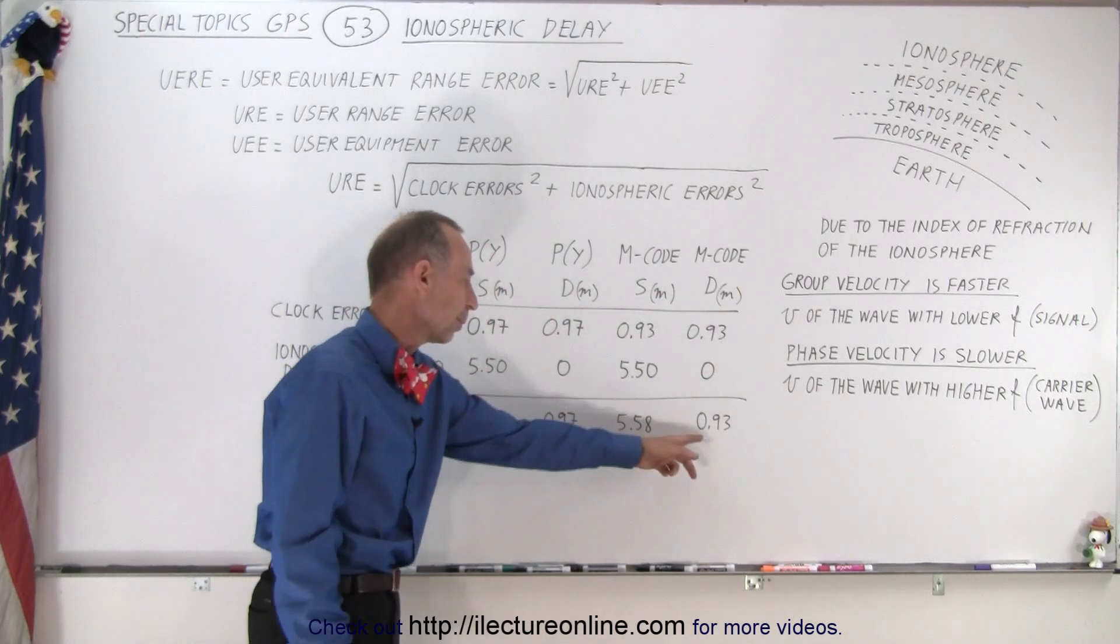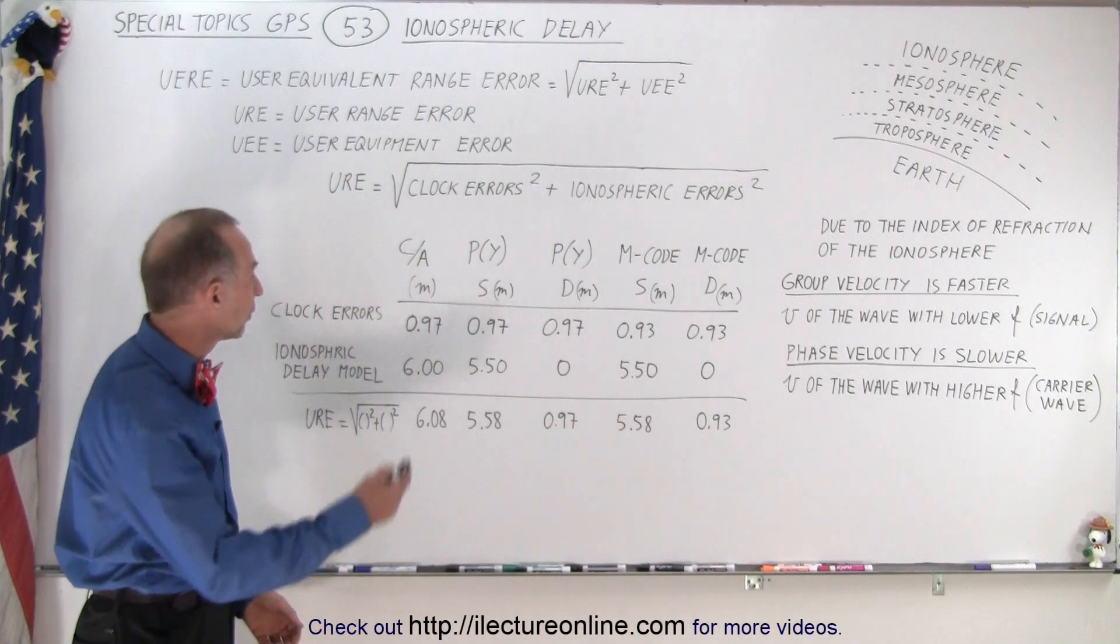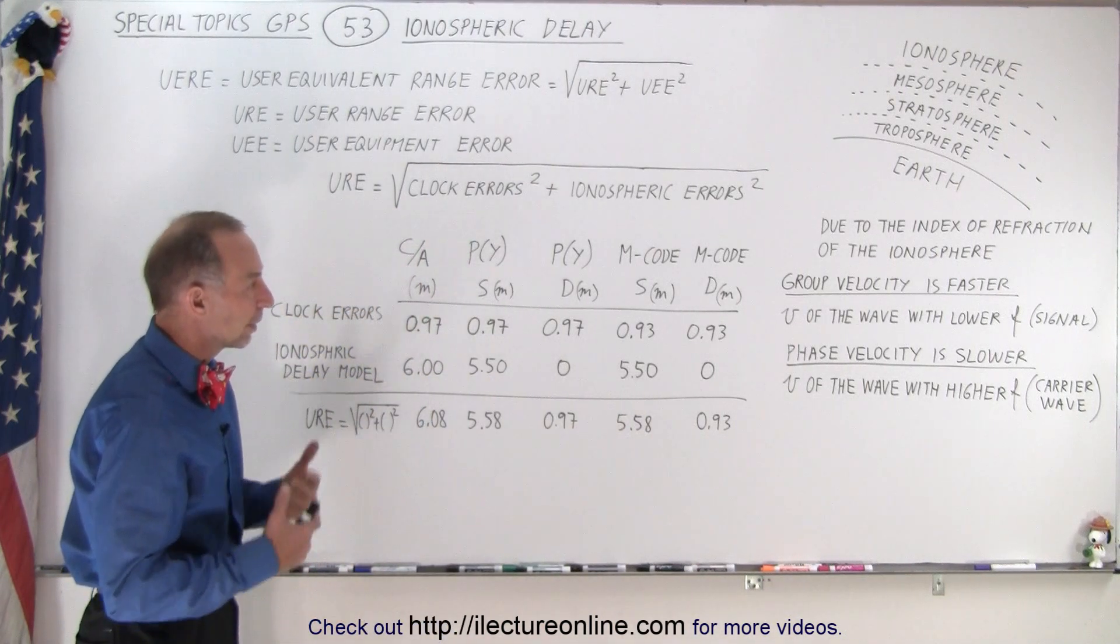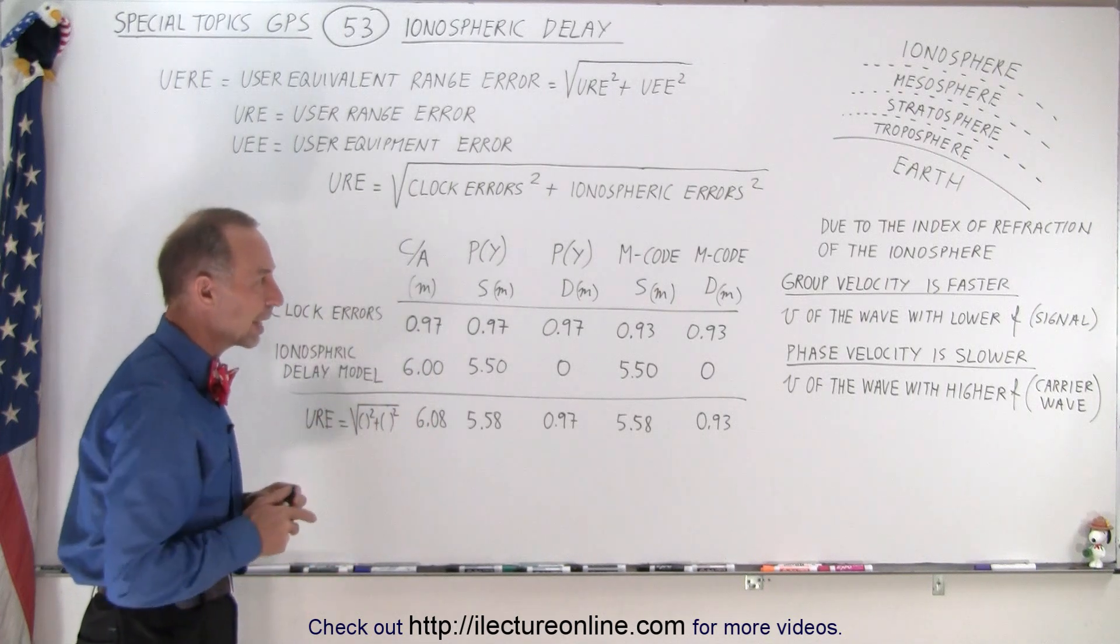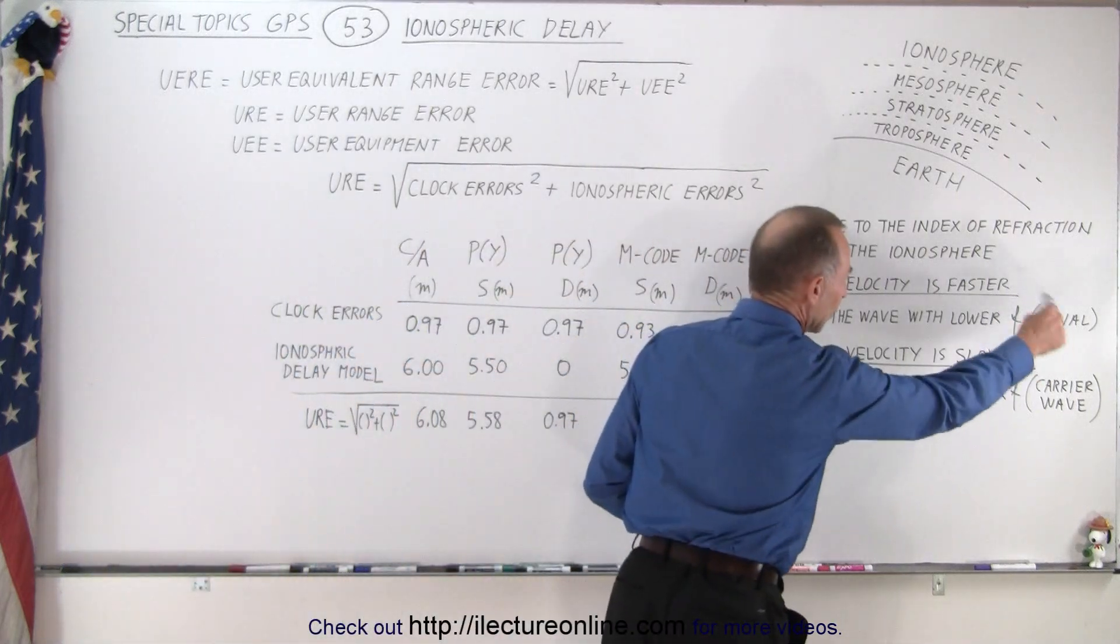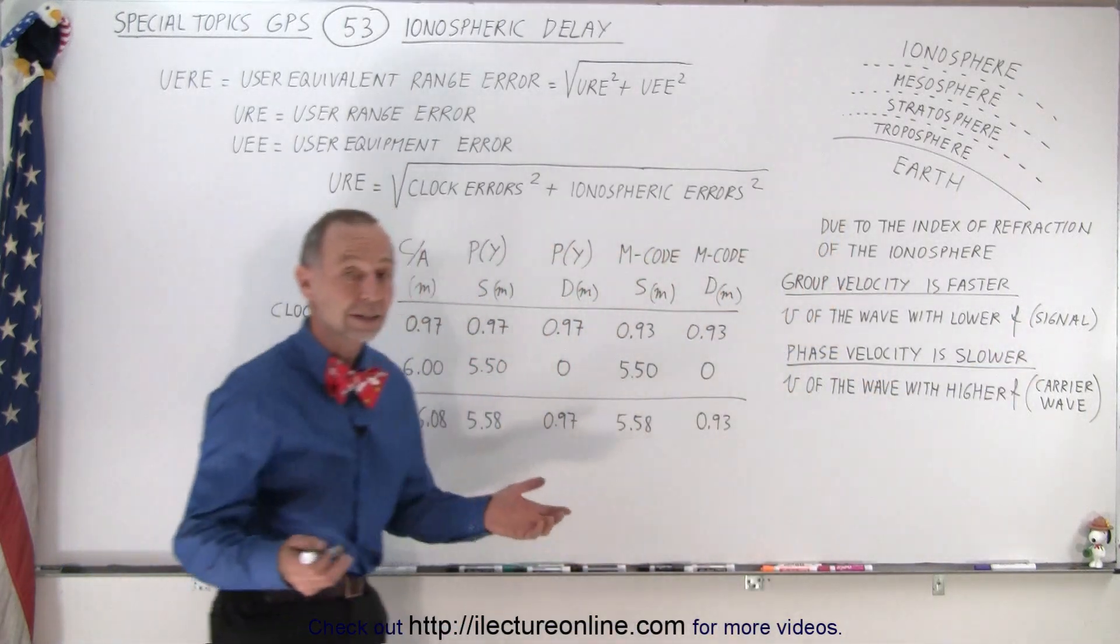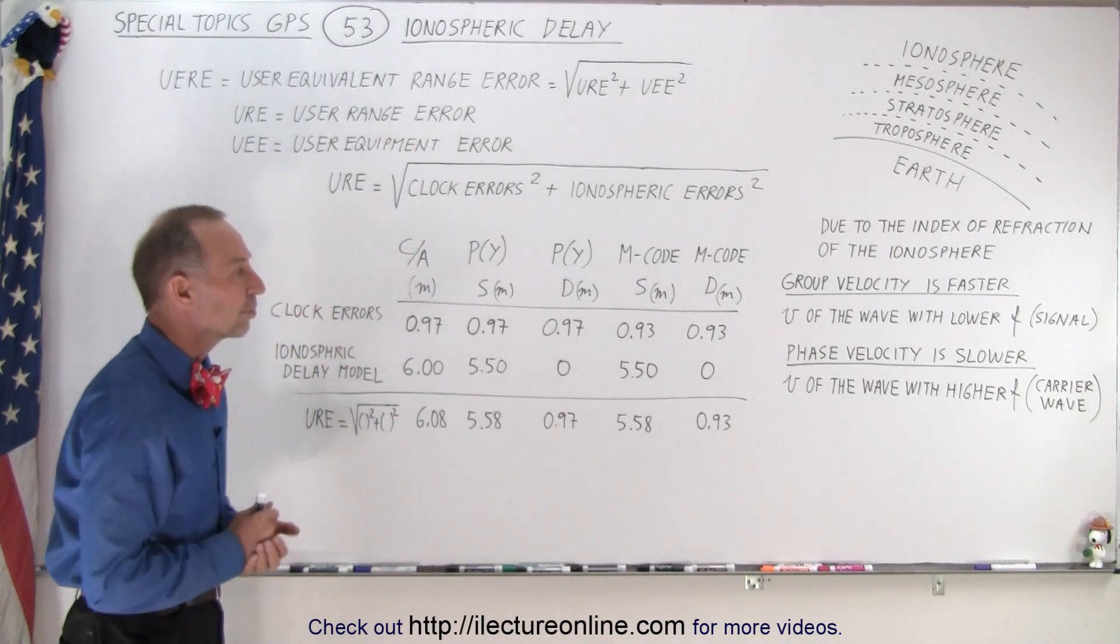So obviously, dual channel, especially in M code, you have the most accurate estimate of the distance based upon knowing how the atmosphere is affecting the signal that we get. So you can see why with dual channel, you definitely have a way to get rid of the fact that both the signal and the carrier wave will travel at different speeds through the ionosphere.